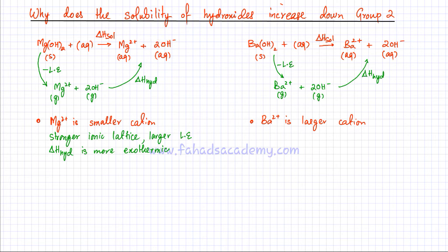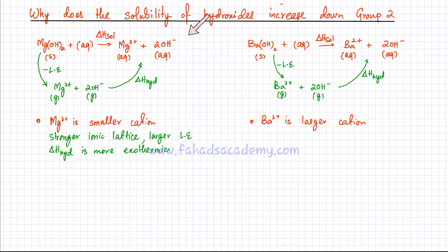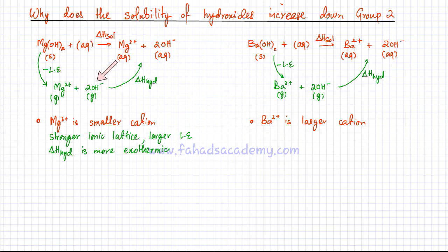The same enthalpy of solution equation applies to barium hydroxide — it's solid and when mixed in water it dissociates to form aqueous ions. Now barium hydroxide is very soluble but magnesium hydroxide has very, very slight solubility. As discussed previously, when you're dissolving substances there are two steps: first, the ionic lattice breaks and gaseous ions are formed; then those gaseous ions form bonds with water molecules, surrounding themselves with water. This is the enthalpy of hydration, and they form aqueous ions.